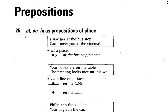For example, I saw her at the bus stop. So 'at' is the preposition. It connects 'I saw her' to 'the bus stop'. So the preposition connects the sentence together.